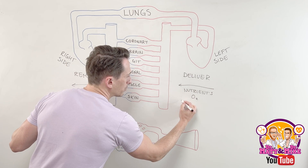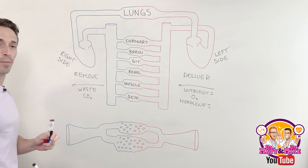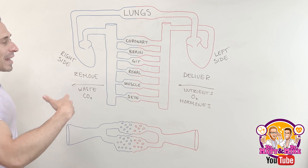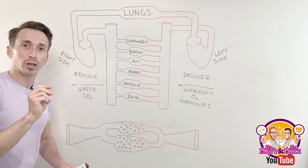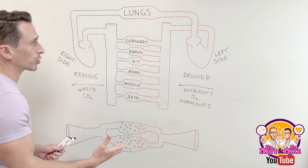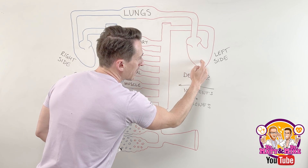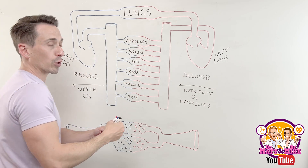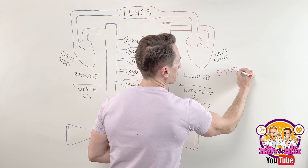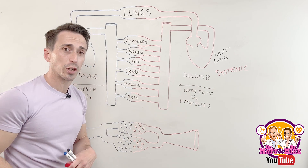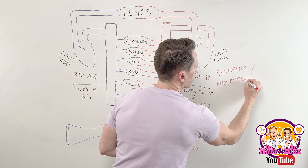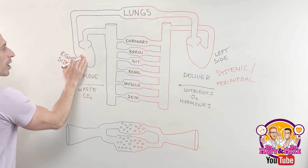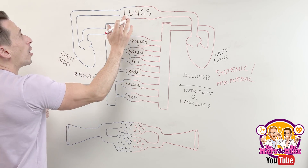We're also delivering things like hormones as well. So we know now what the circulatory system does — it's delivering stuff and taking stuff away. And it actually does this through two separate circulations. We have what we call a systemic circulation, which is where we go from the left-hand side of the heart to deliver all these things to the tissues of the body. Sometimes it's referred to as the peripheral circulation. And then we also have what we call the pulmonary circulation — that's the right-hand side of the heart going to the lungs.